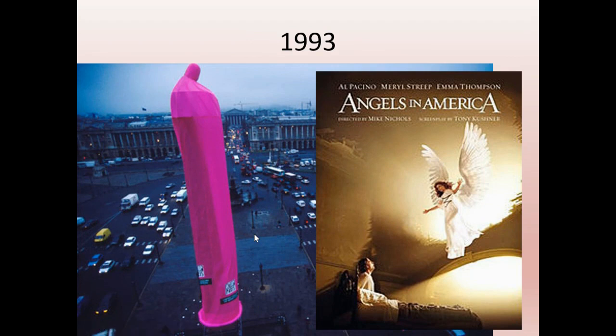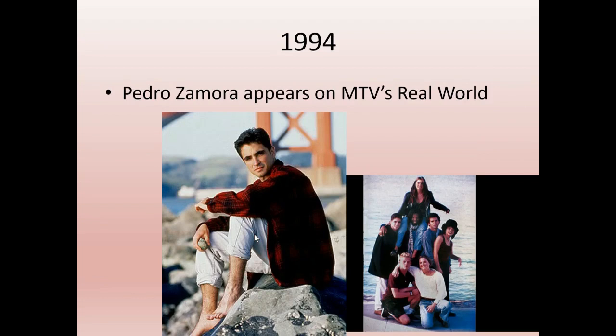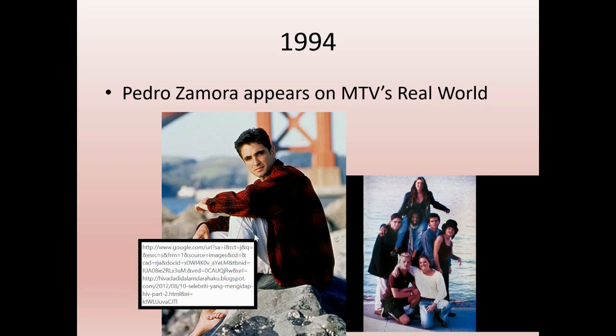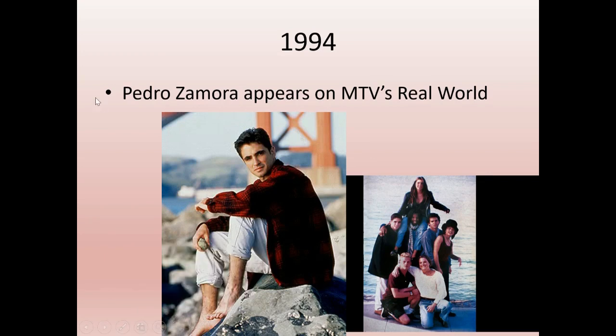In 1993, France decided to get people over their hang-up about condoms by putting a giant 10-story condom on one of the statues on the Champs-Élysées. In 1994, MTV did their last bit of social relevance — in the second season of The Real World set in San Francisco, Pedro Zamora was a young immigrant and openly gay man. Right before filming began, he found out he actually had AIDS, not just HIV. The doctors gave him a few months to live.